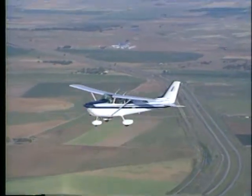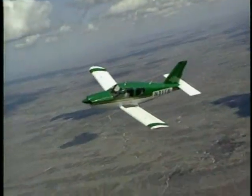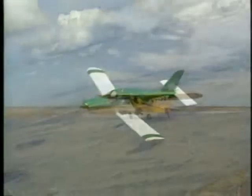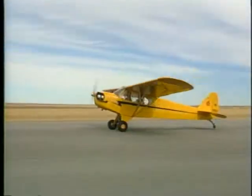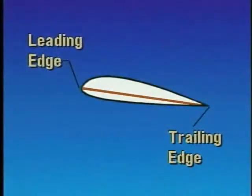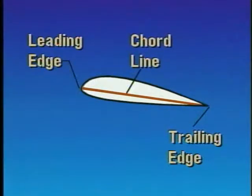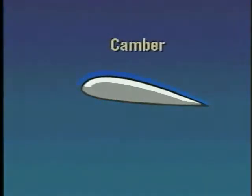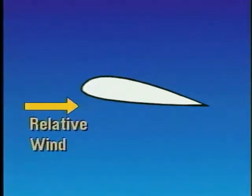Before we look at various airfoils and how they are configured to take advantage of the laws of motion and principles of lift, let's look at some of the terminology. A line drawn from the leading edge to the trailing edge of an airfoil is referred to as the chord line. The camber of an airfoil is the curve of its surface. On general aviation training aircraft, the upper camber is usually more pronounced than the lower camber. Any object moving through the air encounters a relative wind. This wind is always parallel to and opposite the flight path.